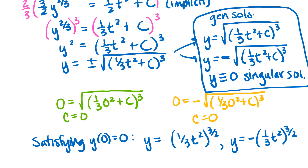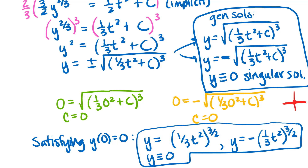Both of those pass through the point (0, 0). Additionally, the singular solution y equals zero is just a horizontal line that also passes through the initial condition. So altogether there are three different solutions that satisfy that initial condition — we'll refer back to this example when we discuss relevant theorems later this week.